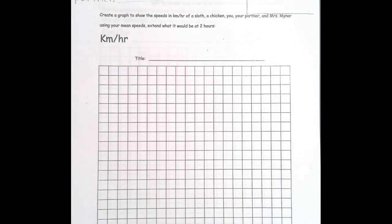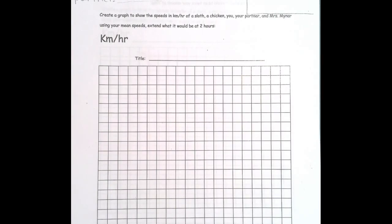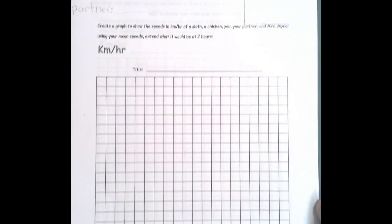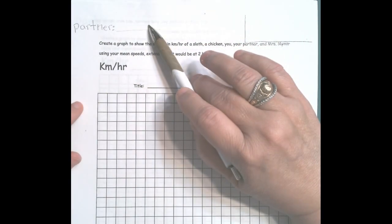Okay, so we're going to take our data and create a graph. This particular graph is going to be using kilometers per hour, and then we're going to extend it to two hours. Every graph needs a title. You can decide what your graph's title can be, but before you do that, put your heading in the top right corner and put your partner's name that you worked with when collecting data.